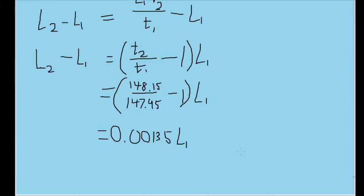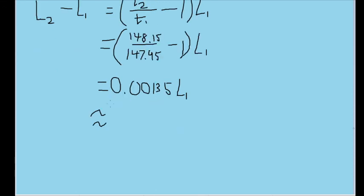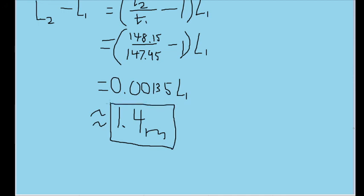We find that the length difference is about 0.00135 times L₁, the length of track 1. Since the race is, in theory, supposed to be around 1 kilometer long, let's put 1,000 meters in for L₁ to get an approximation of the actual difference. If some tracks are longer than others, then at least some won't be precisely 1,000 meters, so I'll drop a significant figure to emphasize this uncertainty. Because of that, we find the difference to be about 1.4 meters. This is as long as track 2 can be relative to track 1 before we can no longer confidently claim that runner number 1 is the faster runner.